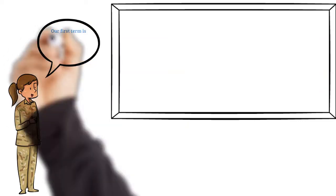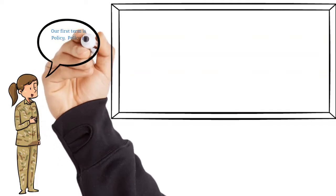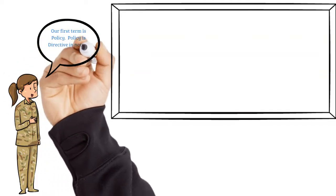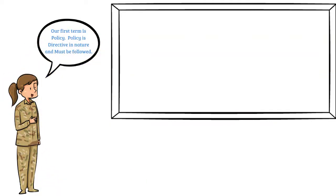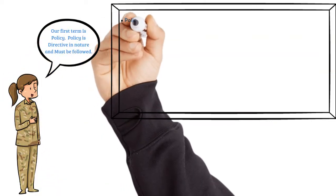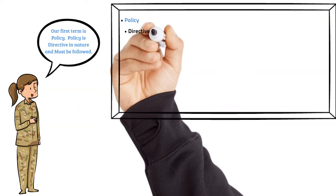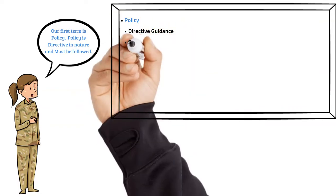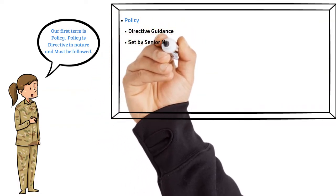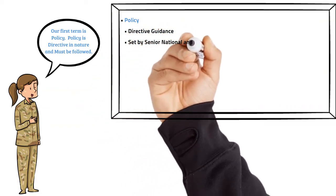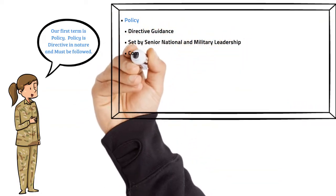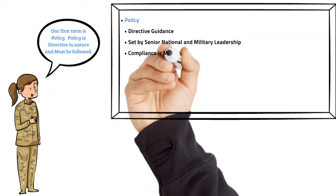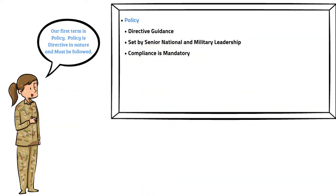The first term we need to understand is policy. Policy is directive guidance stating what is to be accomplished. Senior national and military leadership sets policy. Compliance is mandatory, not optional.